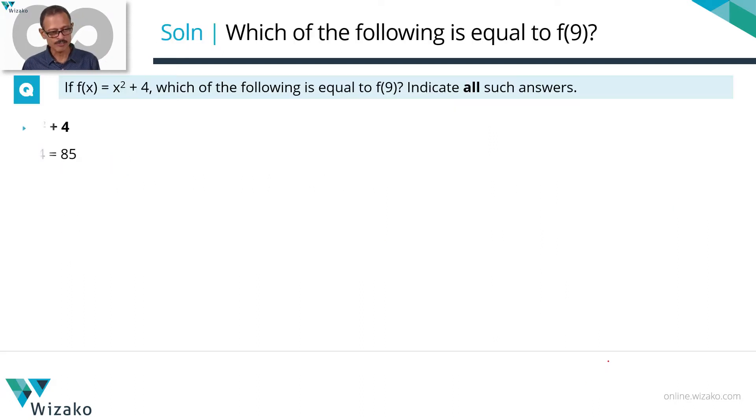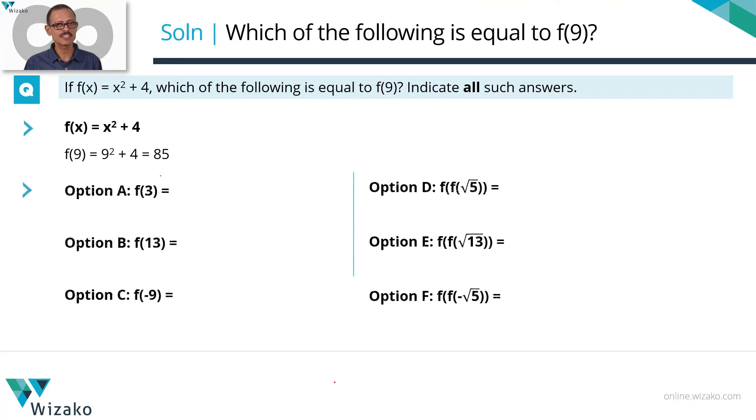So let's start with finding out f(9). f(9) equals, replace all x with 9, 9 squared plus 4 which is 81 plus 4 which is 85. Now we're going to go through all of these answer options one after the other and check out which one has the same answer as f(9) which is equal to 85.